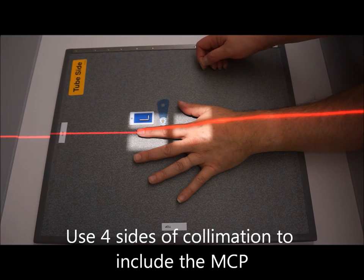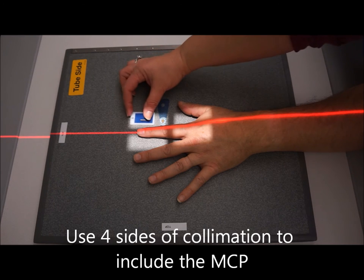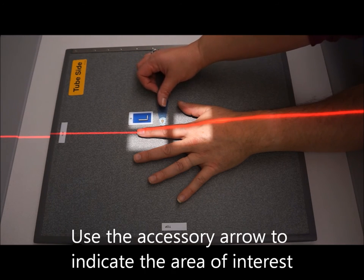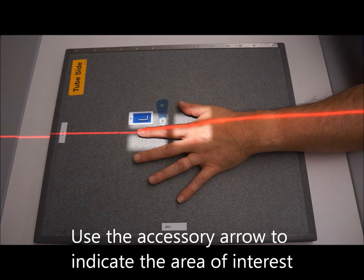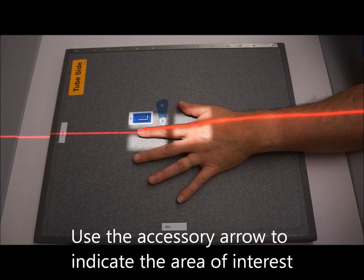We want to make sure that we've got the entire digit distally. I want to make sure that I have the marker here, and then our accessory marker pointing to the area of interest.